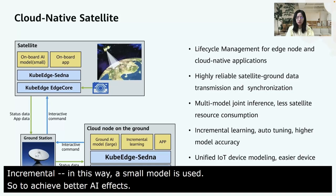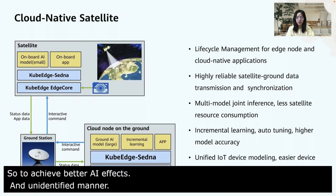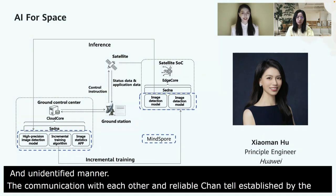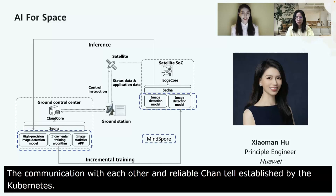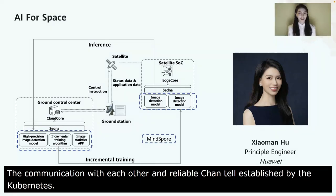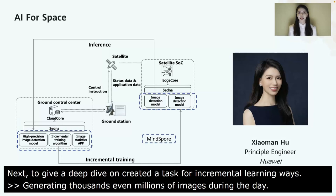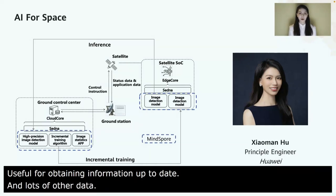All communications are through a highly reliable cloud edge channel established by KubeEdge. Satellites are generating thousands and even millions of images every minute. These data are useful for obtaining information about farmland area, up-to-date online maps, and lots of other data. Having the ability to optimize a vast amount of data using artificial intelligence and cloud native is important for end users. But how can it work if we want to detect farmland area using this data?